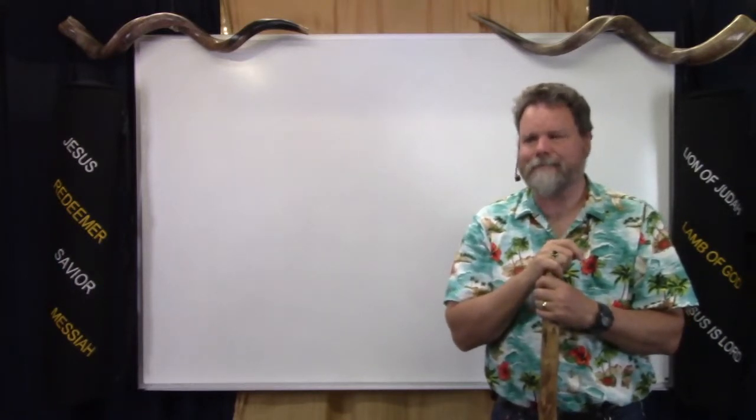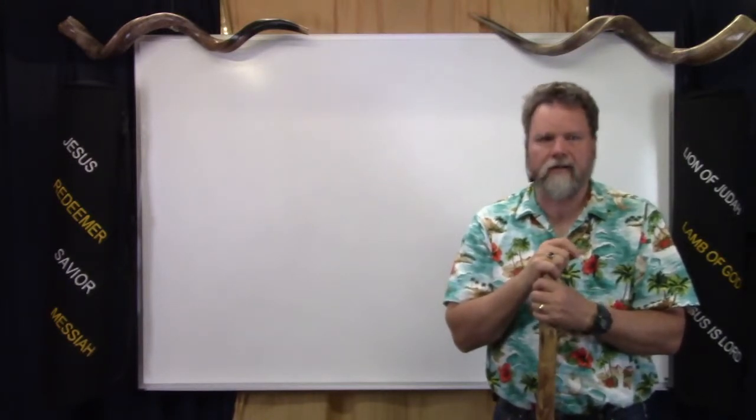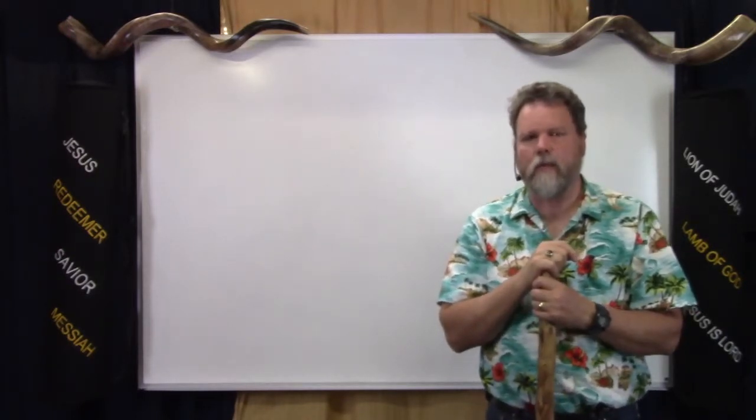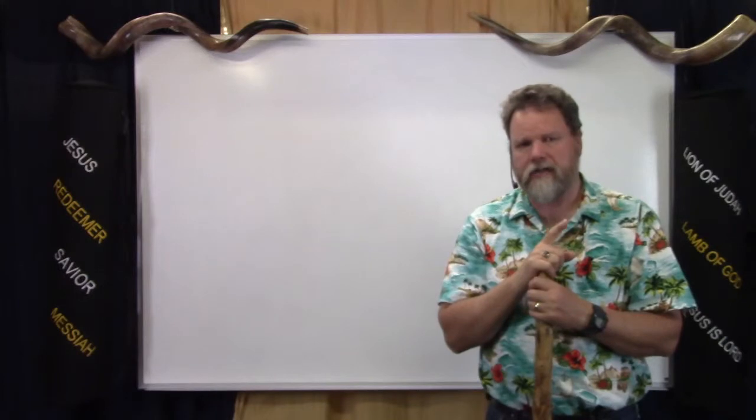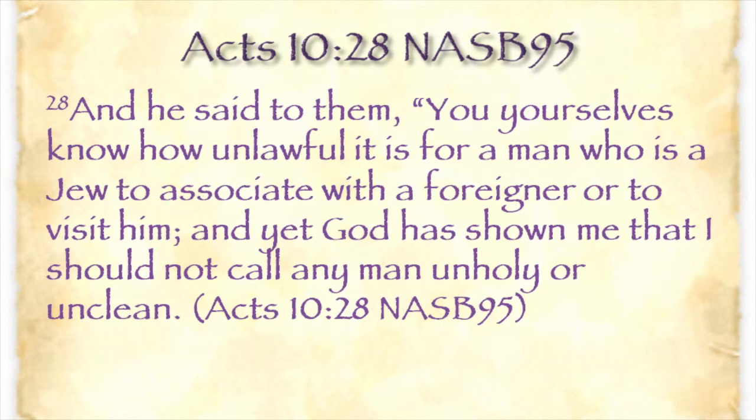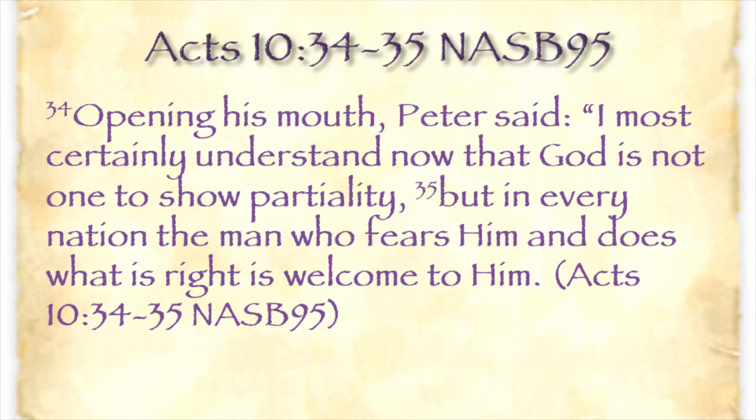Jews wrongly thought, and many still think, that only Jews—clean—are saved, and Gentiles—unclean—are not. God was pointing Peter back to His word and away from tradition. Third, Peter tells us the meaning of the vision as it is written: 'And he said to them, You yourselves know how unlawful it is for a man who is a Jew to associate with a foreigner or to visit him. And yet God has shown me that I should not call any man unholy or unclean.' Acts 10:28.